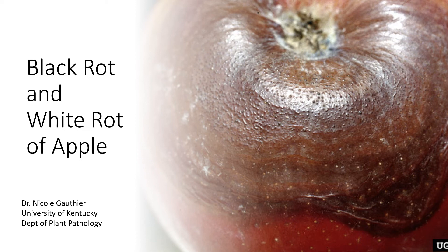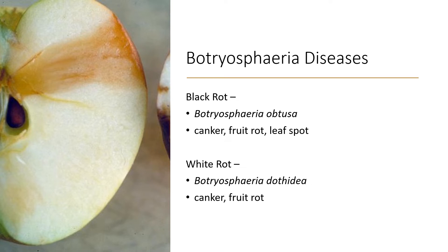Black Rot and White Rot of Apple are both caused by the genus Botryosphaeria. These are fungal pathogens that cause disease not just in apple but in other plants. Black Rot in particular is caused by Botryosphaeria obtusa and White Rot is caused by Botryosphaeria dothidea. Both pathogens cause primarily cankers or woody stem lesions in apple trees and can also both cause fruit rot, and it's the canker disease that we'll be focusing on today.